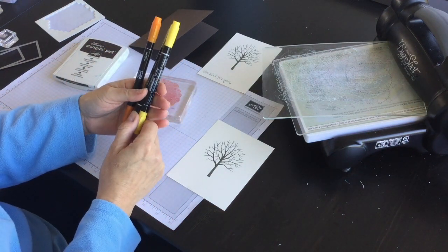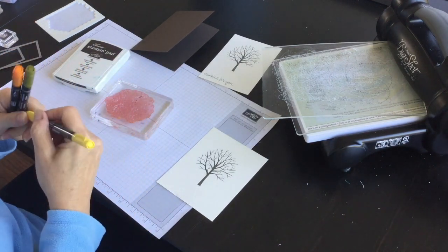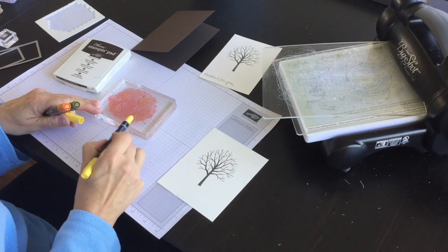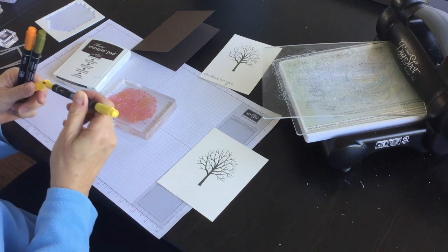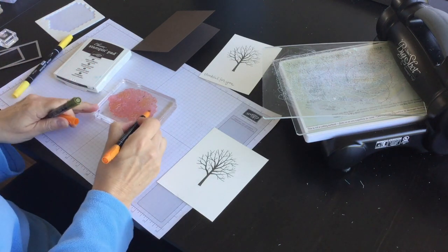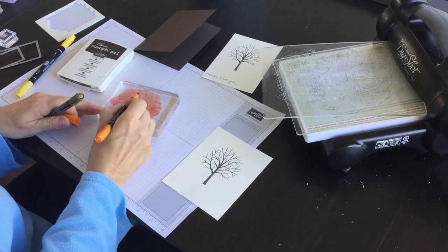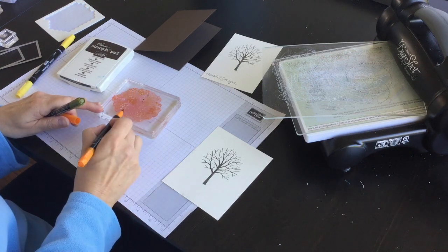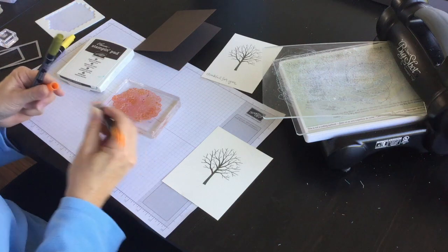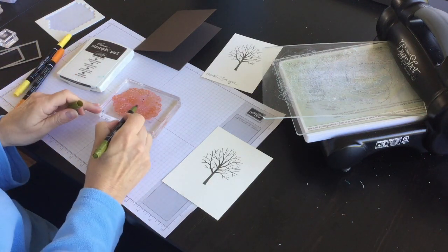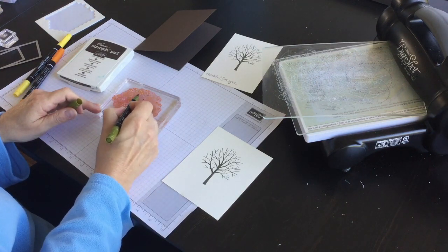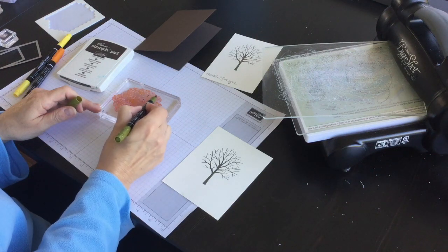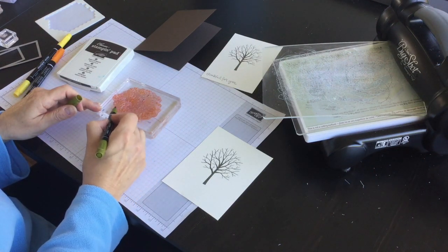I have daffodil delight, I have always artichoke and pumpkin pie. I'm going to start with the lightest color and I'm just going to randomly color some of the leaves on this stamp and then I'm going to use the pumpkin pie. What I'm trying to do is show that the leaves are starting to change and by doing that I'm using the three different colors, and then I'm going to use the rest for the always artichoke.